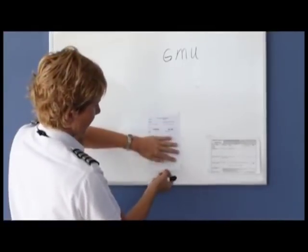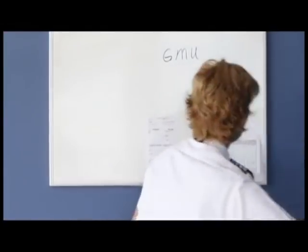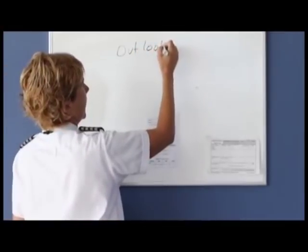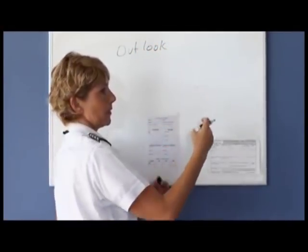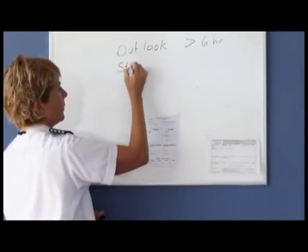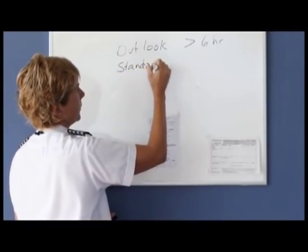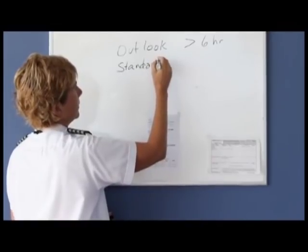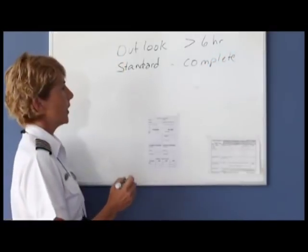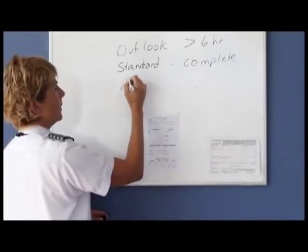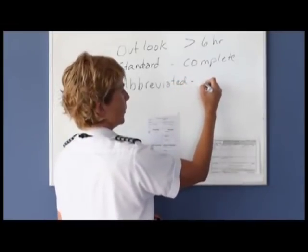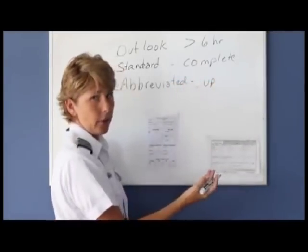There are three types of weather briefings you can ask for. The first is an outlook weather briefing, used if you want information greater than six hours in advance of your actual flight. The second is a standard weather briefing, which is a complete flight briefing. The third is an abbreviated briefing, which is just an update of information you've already acquired earlier.